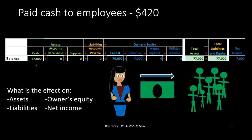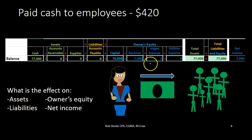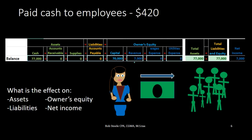We are already in balance before the transaction. We have $77,000 in cash — that's our total assets. We have no liabilities at this point, and in equity we have $70,000 in capital and $7,000 in revenue. Total assets add up to $77,000, and liabilities and equity add up to $77,000. We have $7,000 in net income represented by the revenue account.